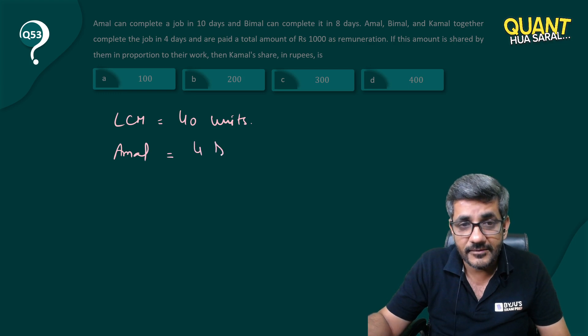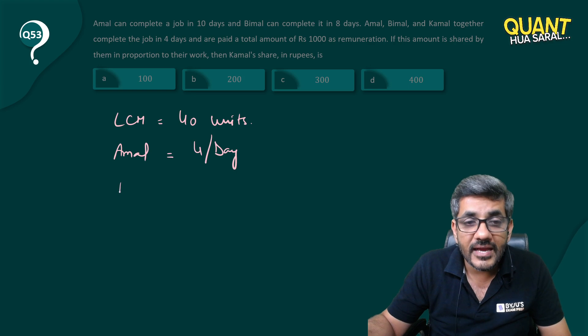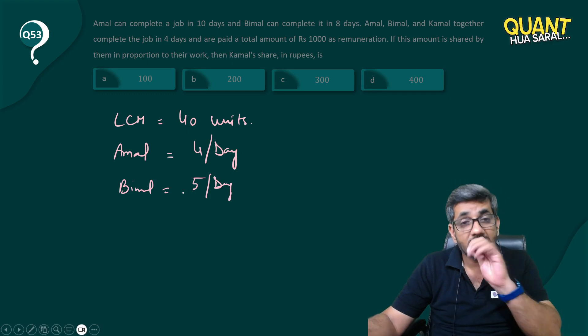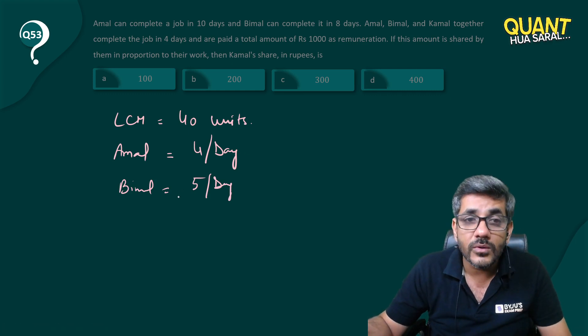So he is making 4 units per day. Bimal can make these 40 units in 8 days, so he is making 5 units per day. With Kamal, they are able to complete the work in 4 days.